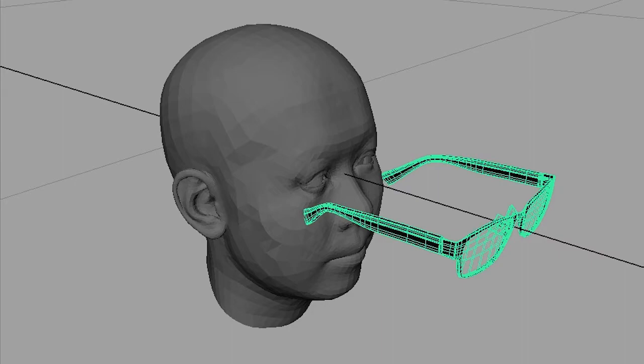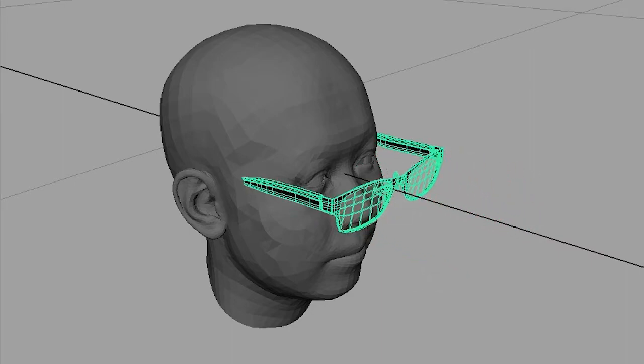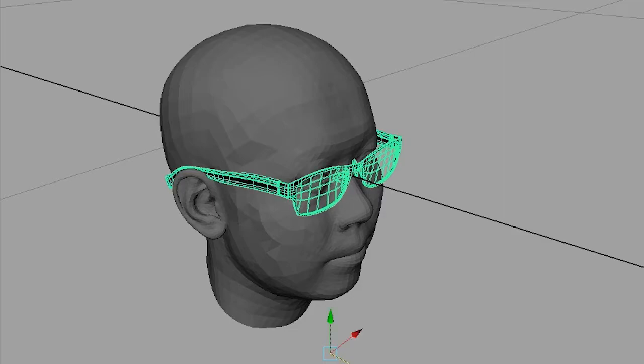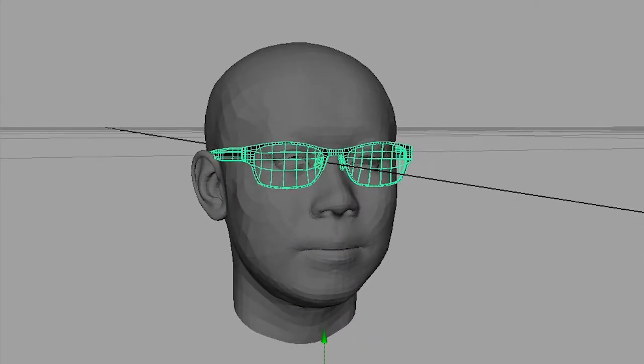We first position the eyeglasses onto the user's face geometry. Manual positioning of the eyeglasses is done for the first frame. For the subsequent frames, we use face tracking for automatic positioning.